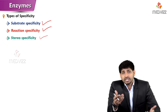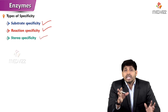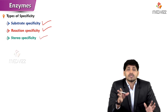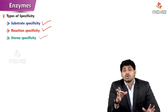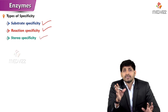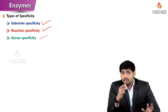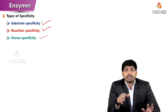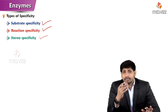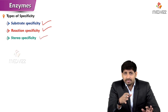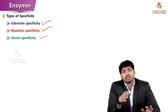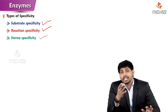So, types of specificity: each enzyme is specific in nature. Based on this specificity, there are three categories — substrate specificity, reaction specificity, and stereospecificity.